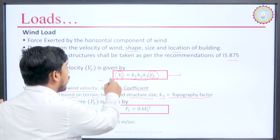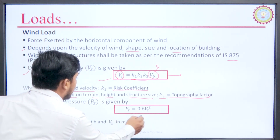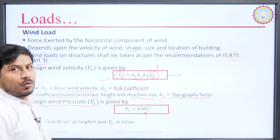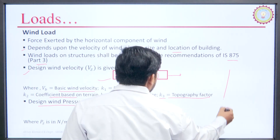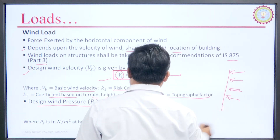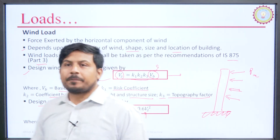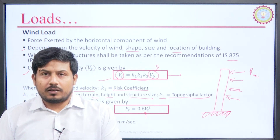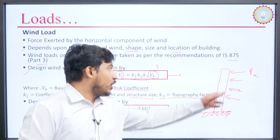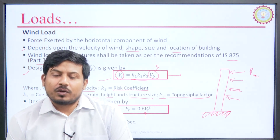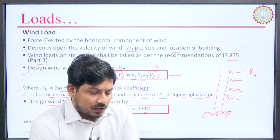If we calculate Vz by knowing k1, k2, k3, and Vb, we can directly calculate the design wind pressure Pz from this equation. This will be the pressure through which we will design our structure. We will solve one problem in the later part of this module to calculate the value of Pz, the wind pressure.